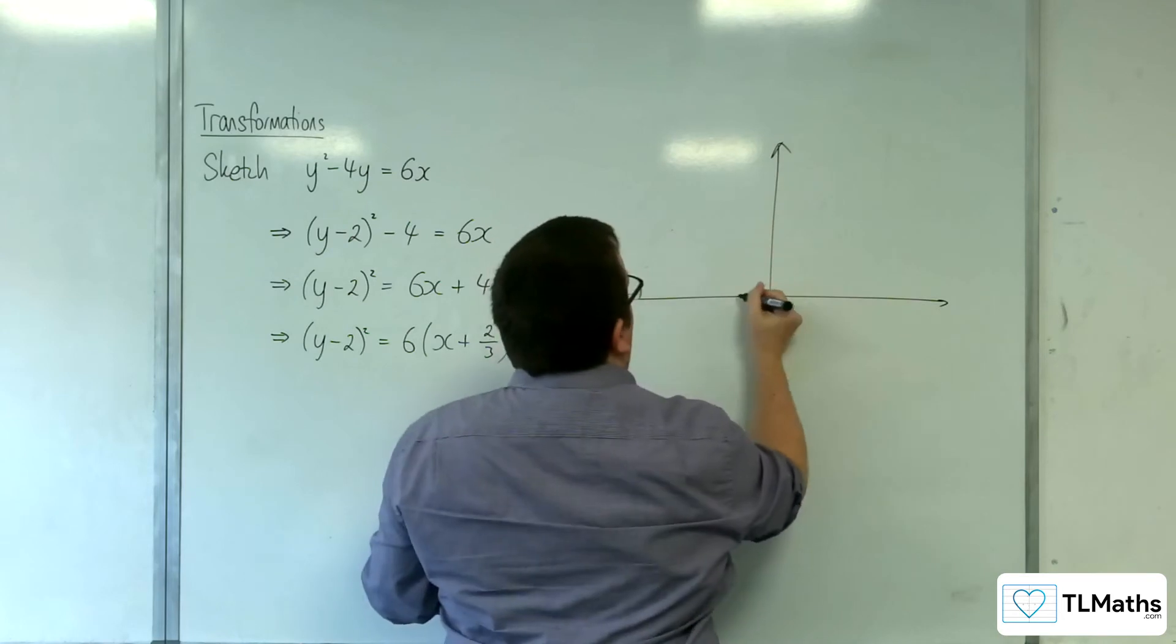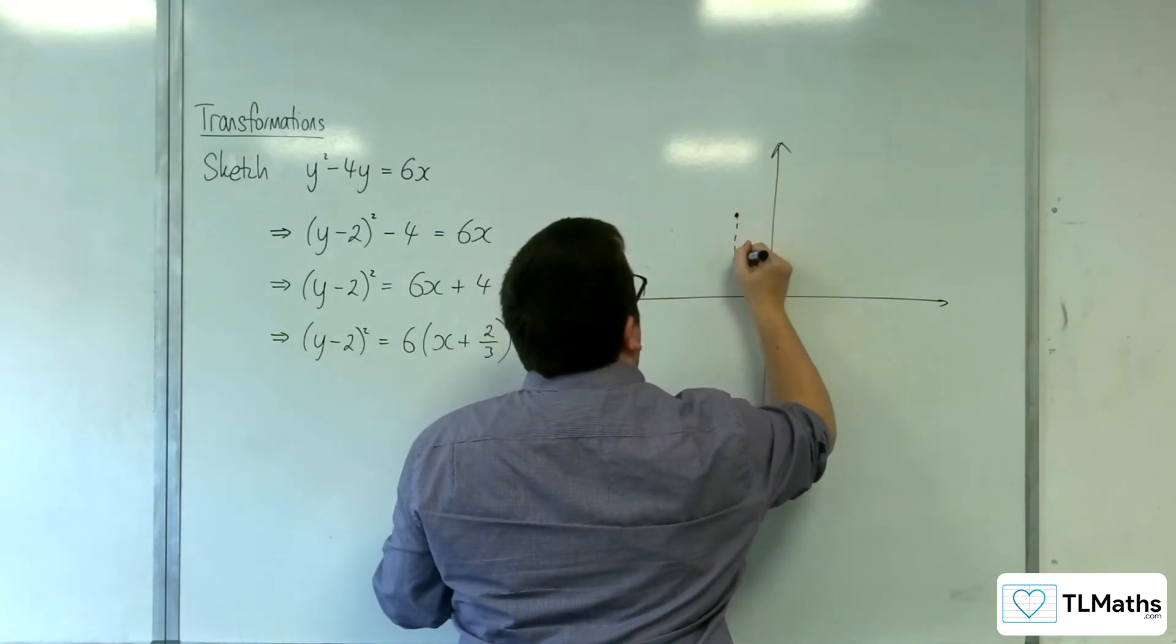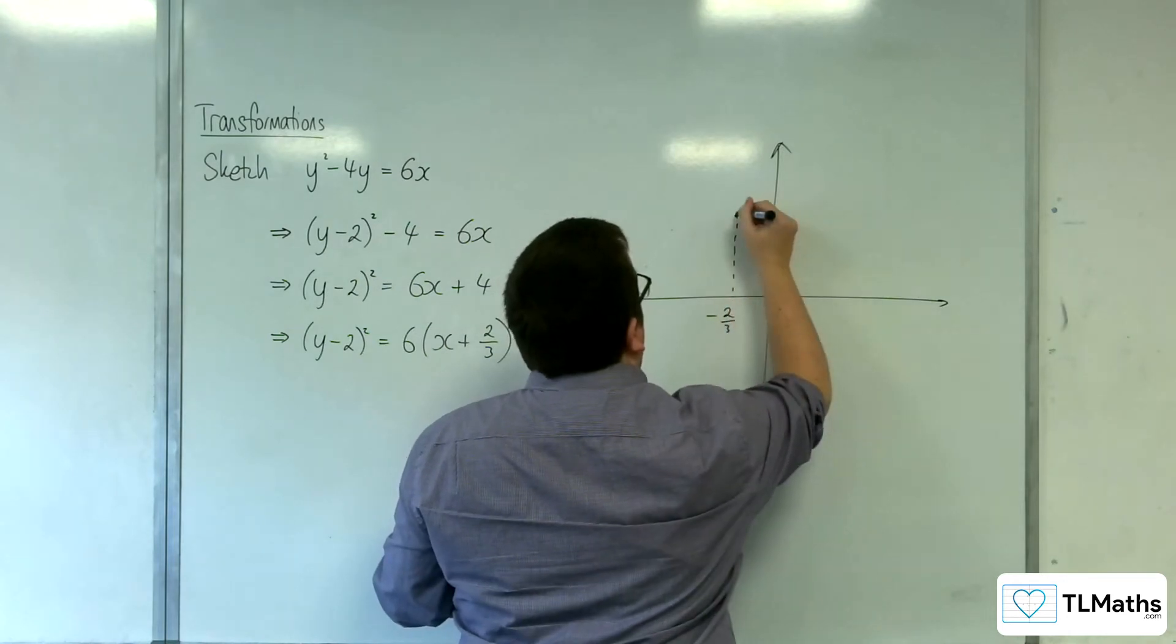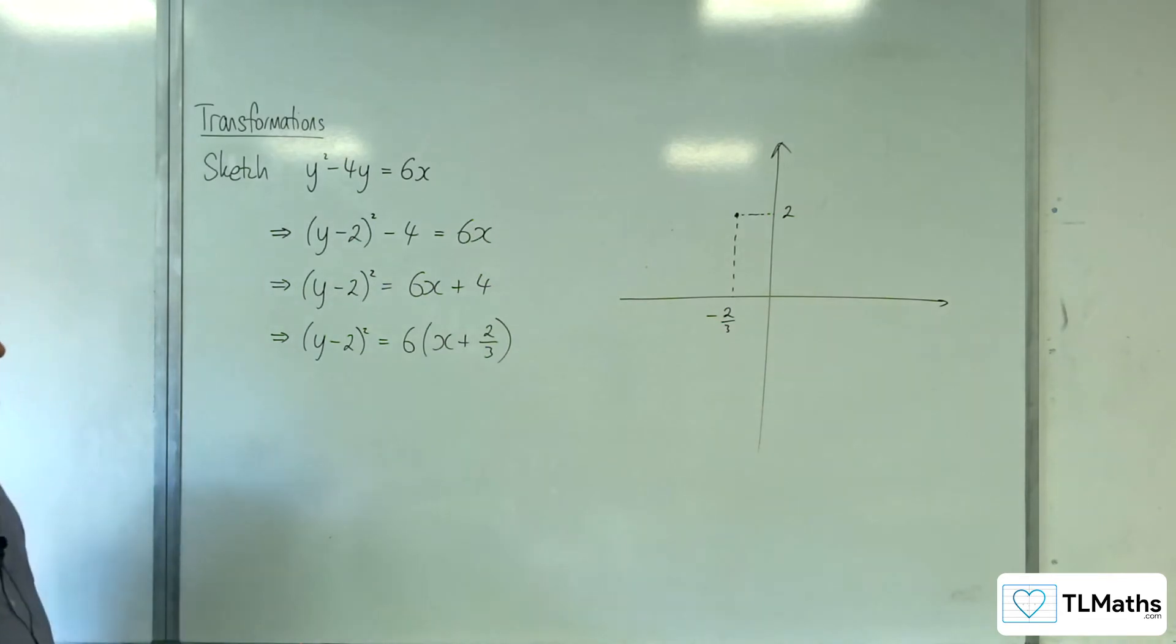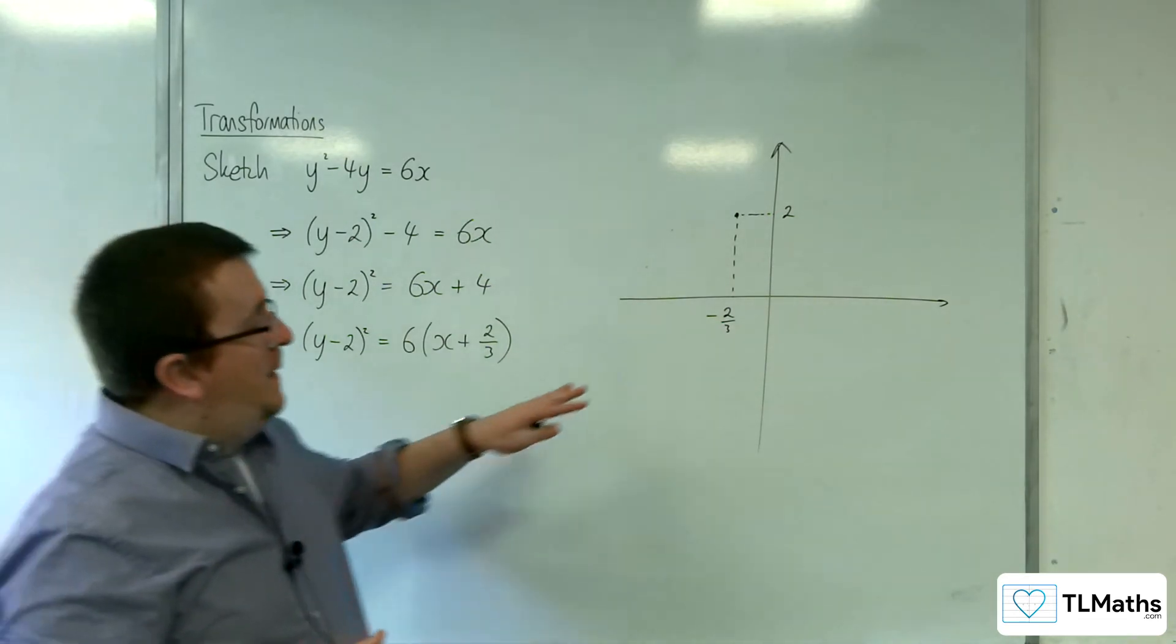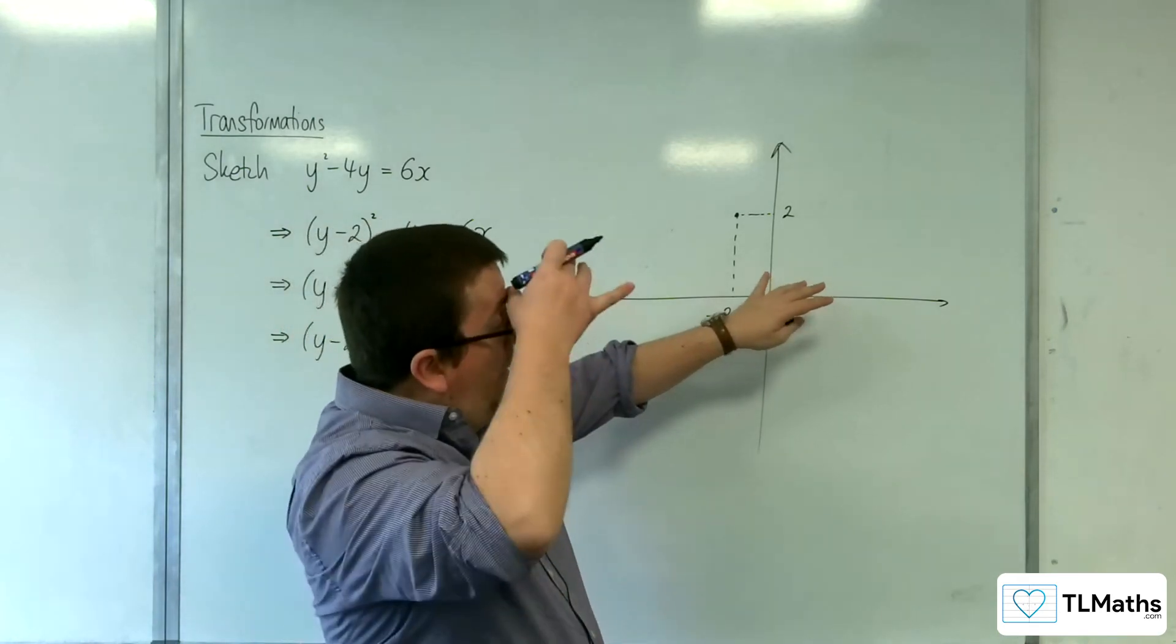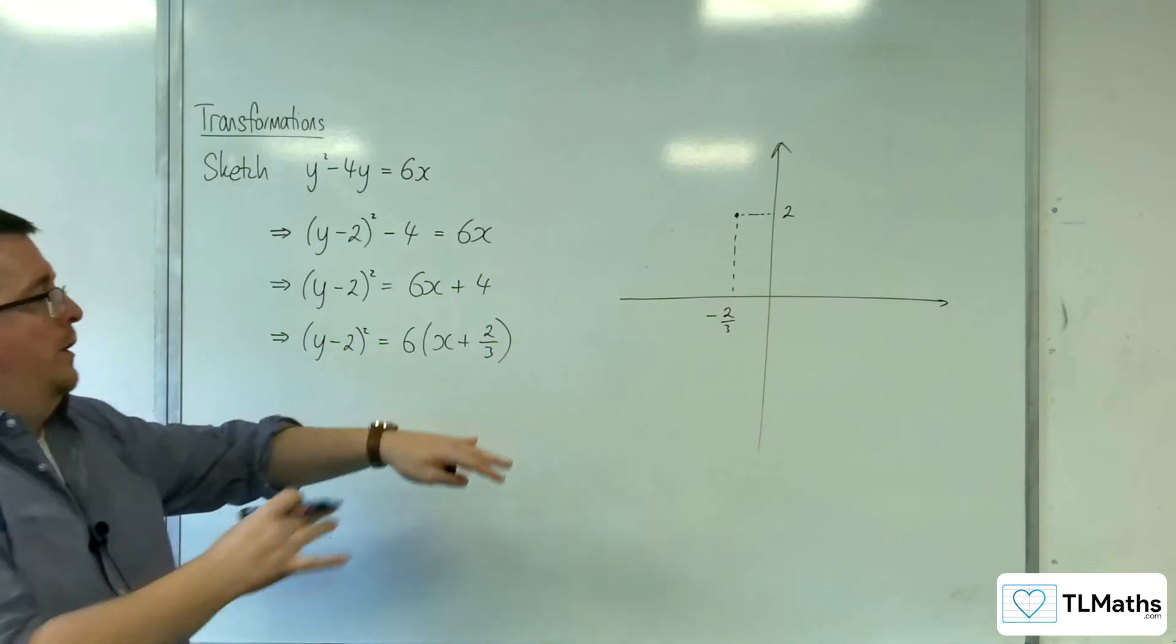So minus 2 thirds, 2 would put me somewhere up here. Then I need to work out, before I draw the curve, I need to be a little bit careful about whether it's crossing the y-axis above or below the x-axis.